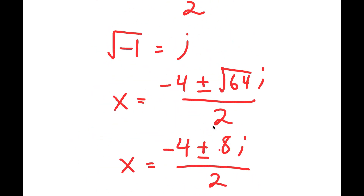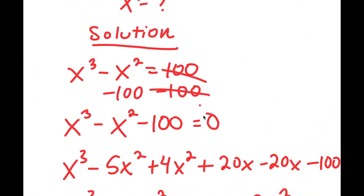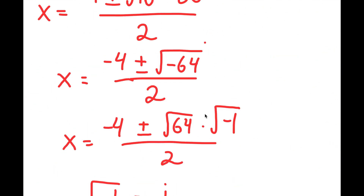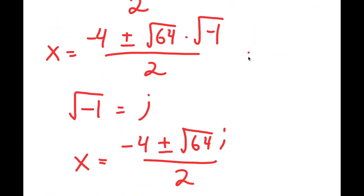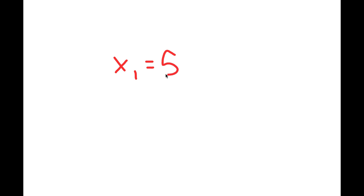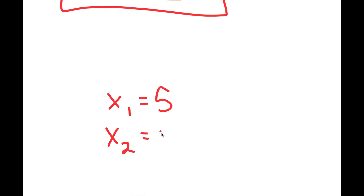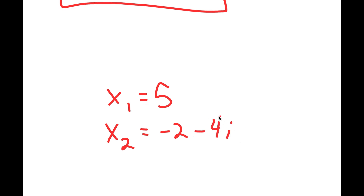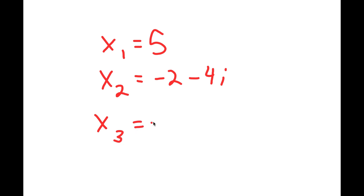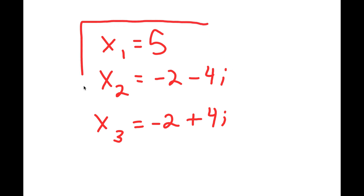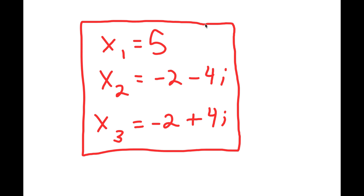So my three solutions to this problem are: x equals 5, x equals negative 2 minus 4i, and x equals negative 2 plus 4i.